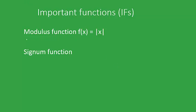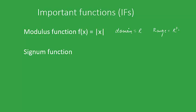The next function we look into is the modulus function, which is defined as f(x) equals |x|. Its domain is the set of all real numbers, and its range is equal to R⁺ — the set of all positive real numbers — together with the element 0.